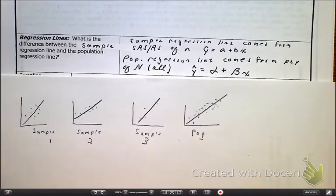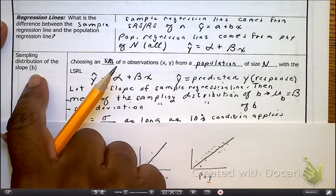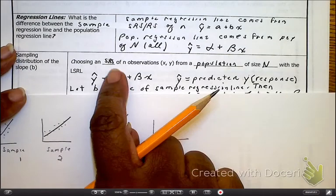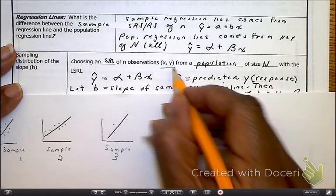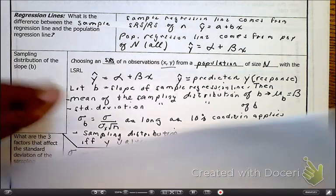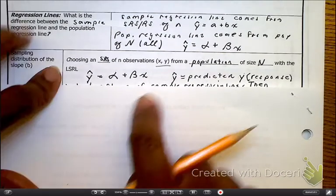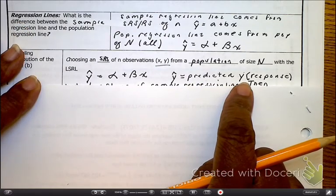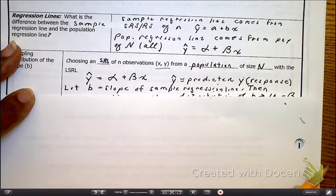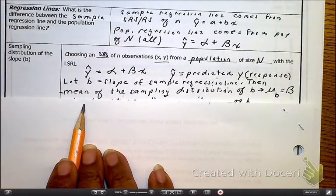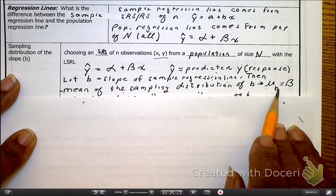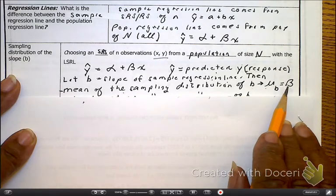When we are looking at a sampling distribution, you know what a sampling distribution is. It's like taking all of these samples, sample one, sample two, sample three. We're choosing an SRS for N observations, but now we're looking at points of X and Y from our population. And remember, our population size with the least square regression line. We are saying here that we have Y hat still being the predictive of Y, where B is the slope of the sample regression. So then if that's true, we have the mean of the sampling distribution.